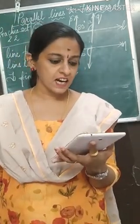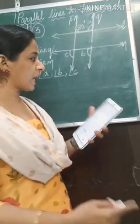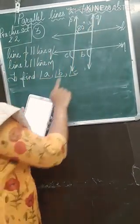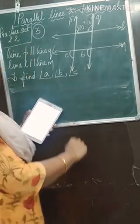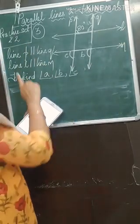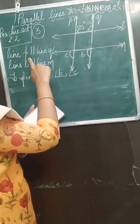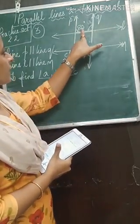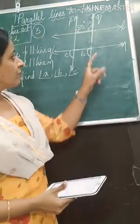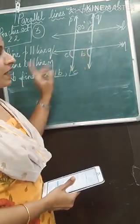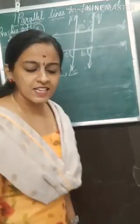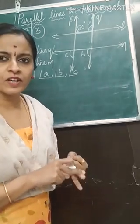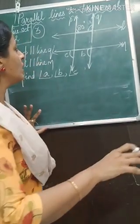The given details are: line P parallel to line Q, and line L parallel to line M. To find angle A, B, and C. Here one angle is given as 80 degrees. We have to find the measure of angle A, B, and C. Let's start with the knowledge of corresponding, alternate, and interior angles to solve this.